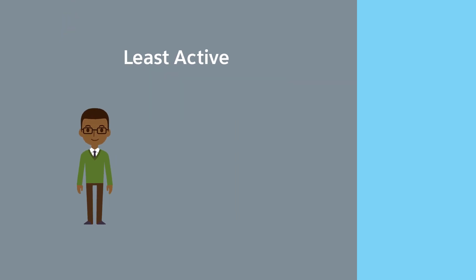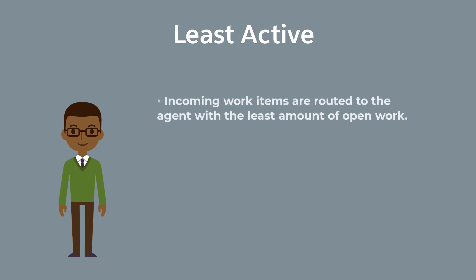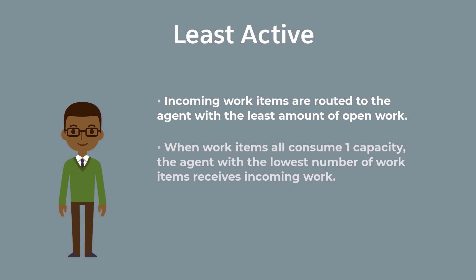With the least active option, incoming work items are routed to the agent with the least amount of open work. When work items all consume one capacity, the agent with the lowest number of work items receives incoming work.